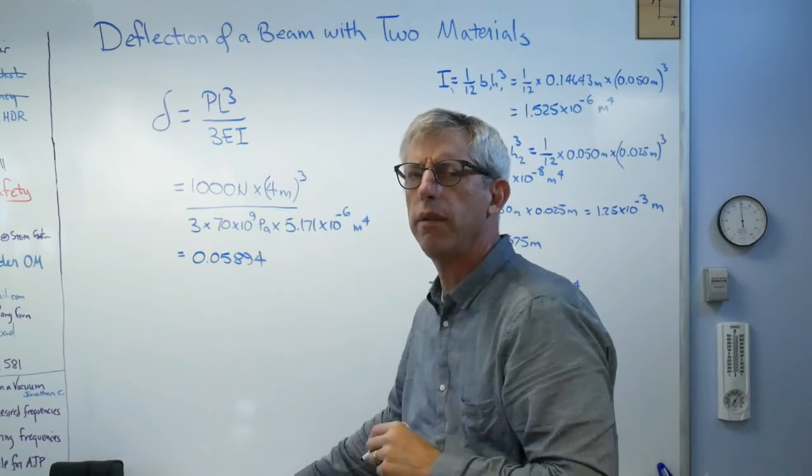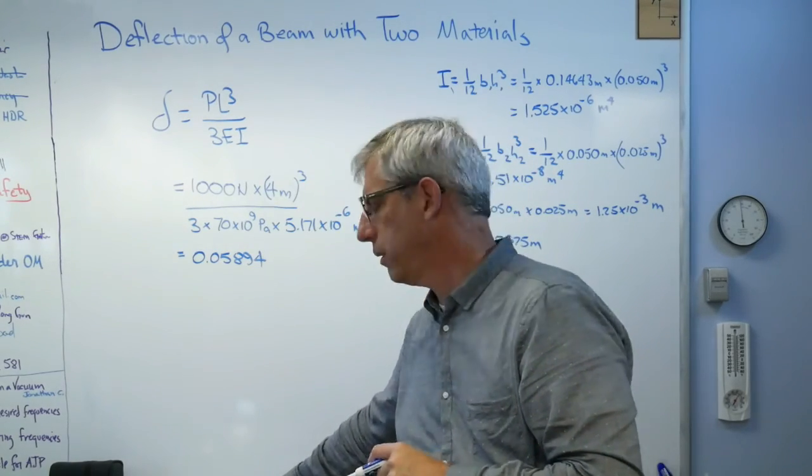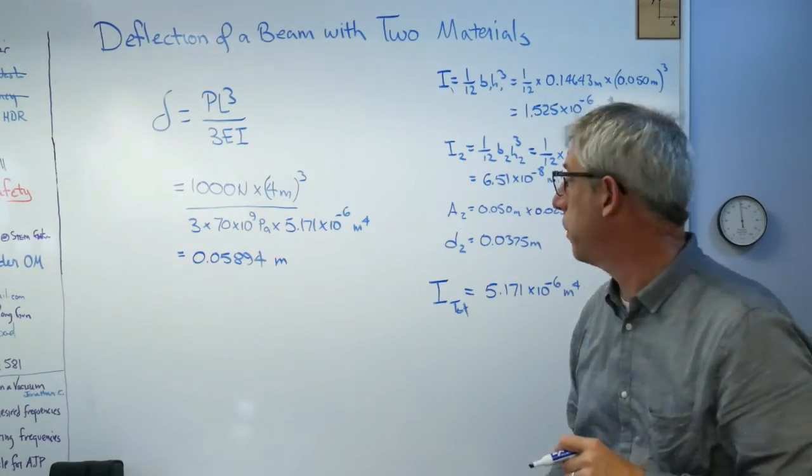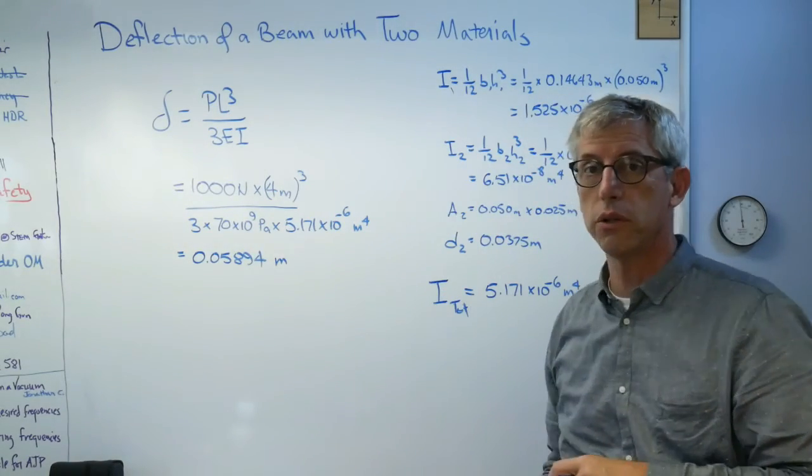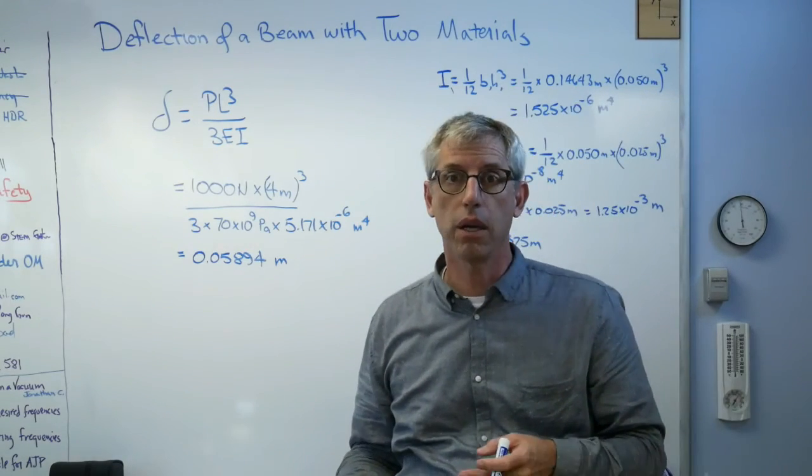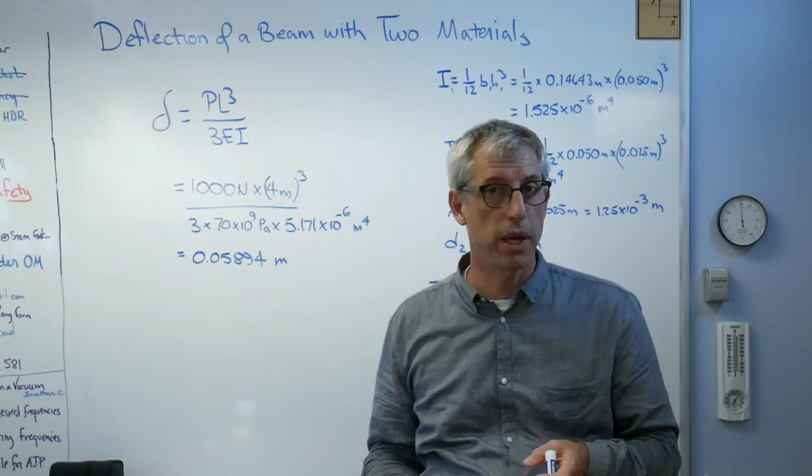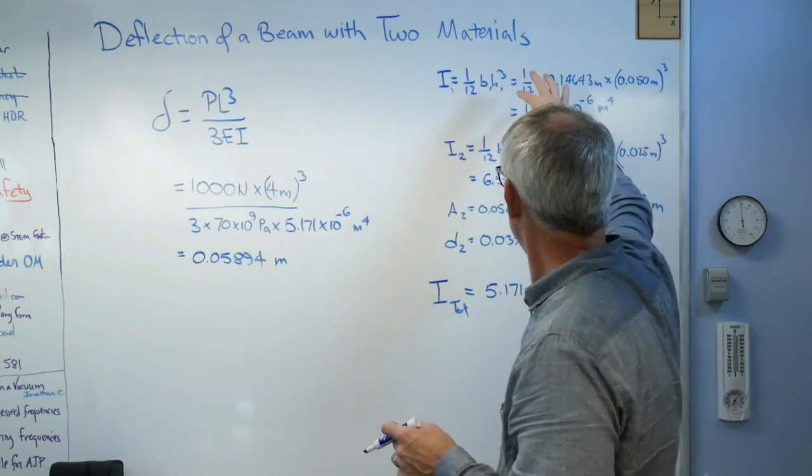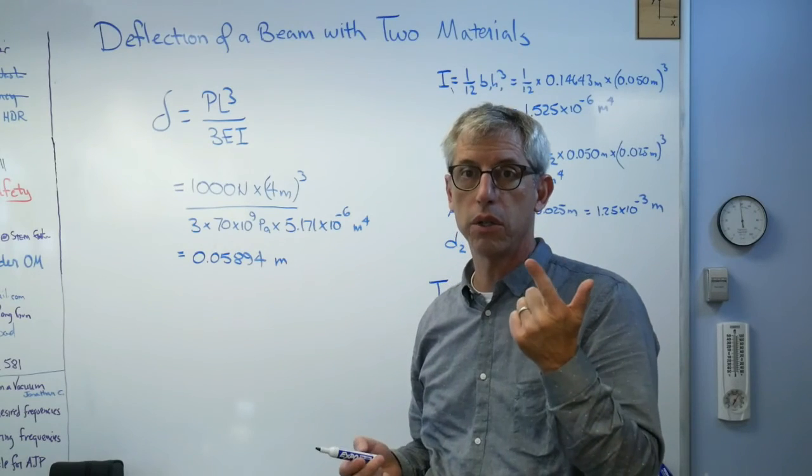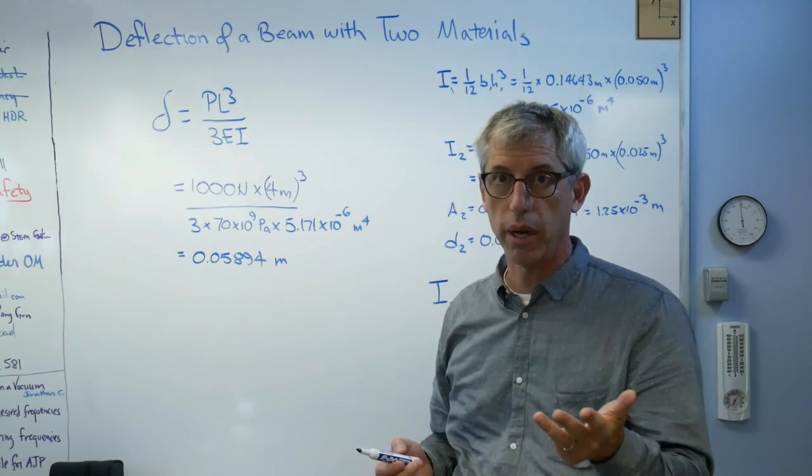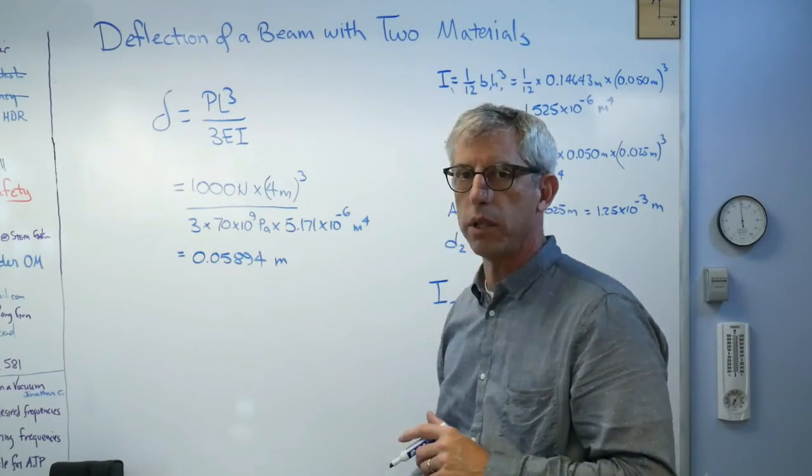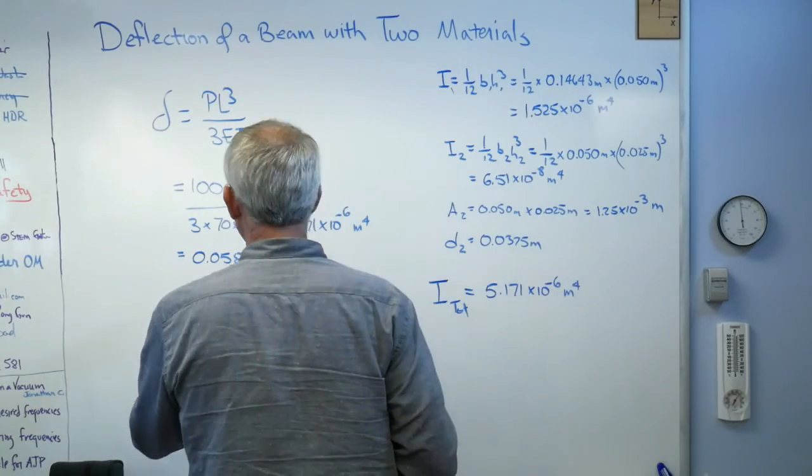0.05894 what? Well, it's going to be meters. Everything was done in the base units here. I didn't try to carry millimeters through. If you try to carry millimeters through, if you do it right, it'll work. But if you don't do it right, you're going to mess up. So if you stick to the basic units, newtons, meters, seconds, kilograms, don't work in anything but those, the units pretty much take care of themselves.